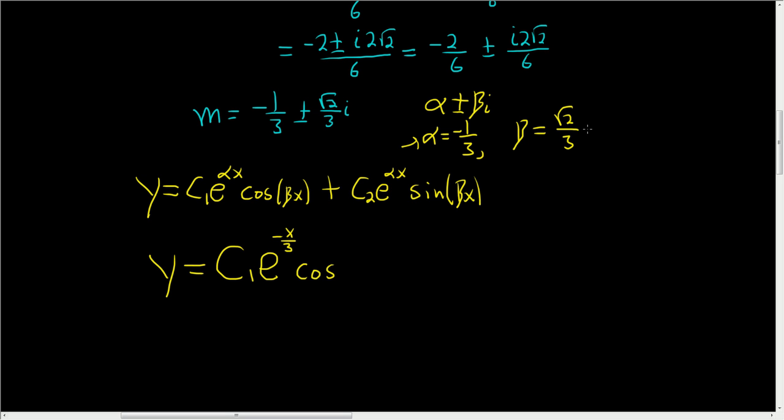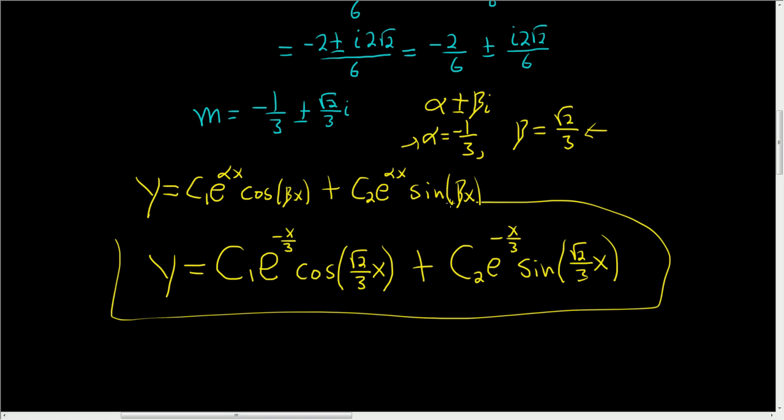and beta is the square root of 2 over 3, so it'll be the square root of 2 over 3 times x. And then plus c2 e to the negative x over 3, and as before, sine of the square root of 2 over 3 times x. And that is the final answer.